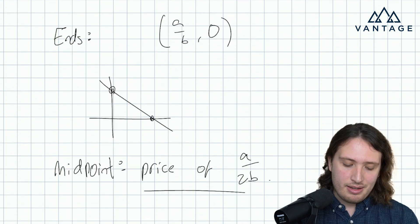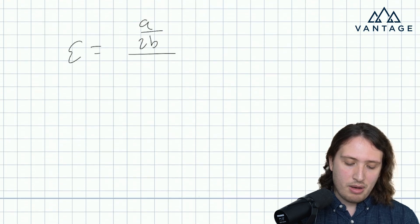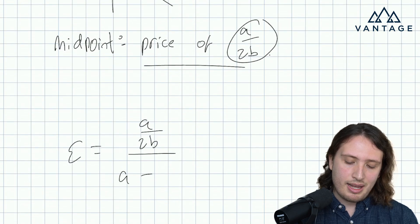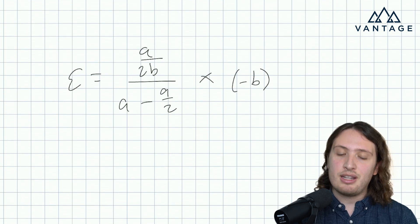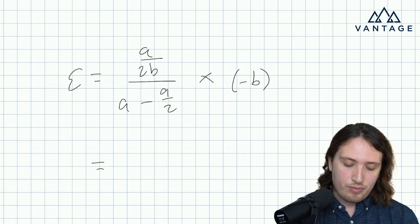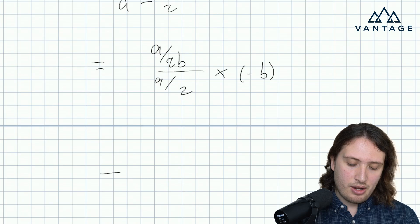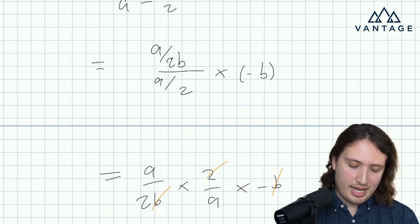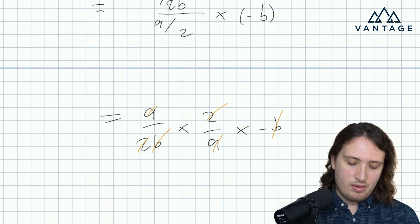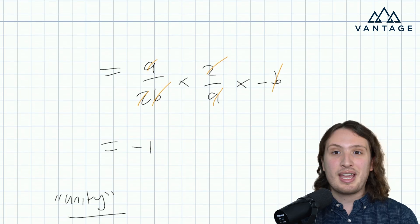We plug p = a/(2b) into our elasticity expression. Epsilon becomes [a/(2b)] divided by [a − b × a/(2b)] times (−b). The denominator simplifies: a − b × a/(2b) = a − a/2 = a/2. So epsilon = [a/(2b)] / [a/2] × (−b) = [a/(2b)] × [2/a] × (−b). Everything cancels to give epsilon = −1, as required. We call that unity because we're always talking about the absolute value.